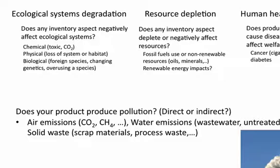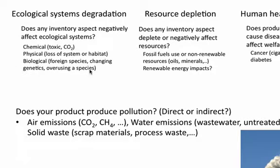Biological ecological systems degradation relates to: are you introducing a foreign species? Are you changing the genetics of species within a forest or among insects? Are you overusing a species? For example, if you're using a lot of leather, are you changing the genetics of the cows to help grow more leather? That would be a potential aspect here.